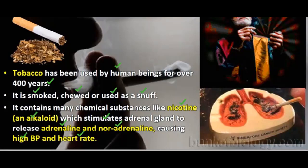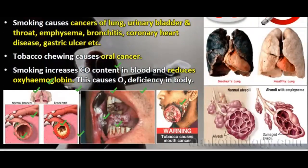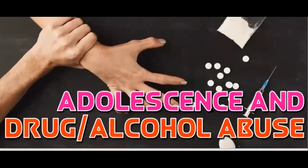Smoking causes cancers of the lung, urinary bladder, and throat, as well as emphysema, bronchitis, coronary heart disease, and gastric ulcers. Tobacco chewing causes oral cancer. Smoking also increases the carbon monoxide content in the blood and reduces oxyhemoglobin, causing oxygen deficiency in the body.